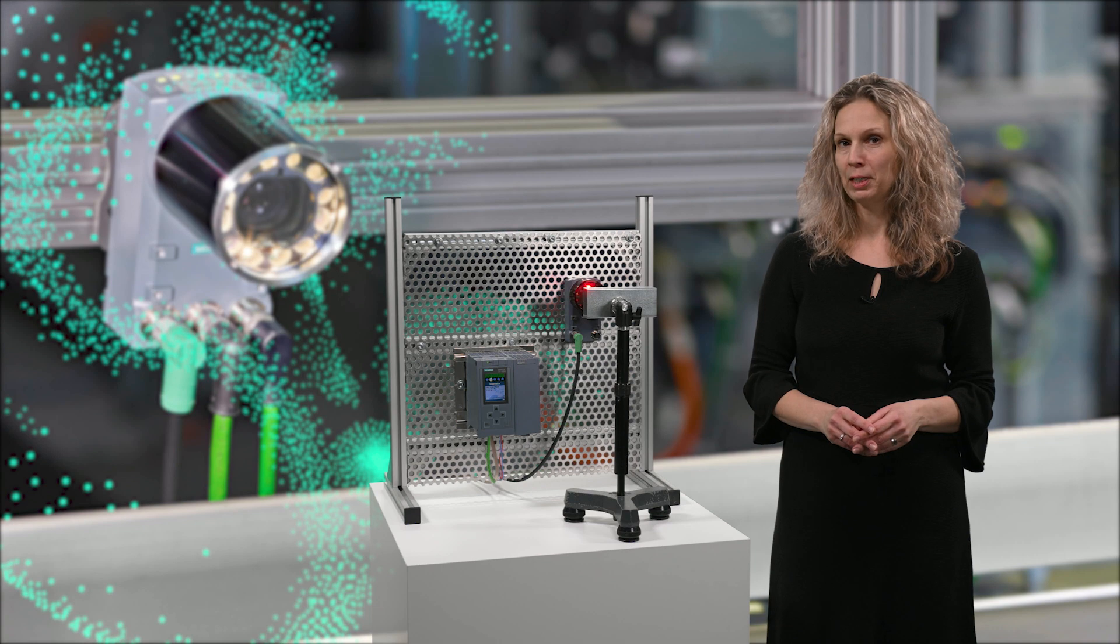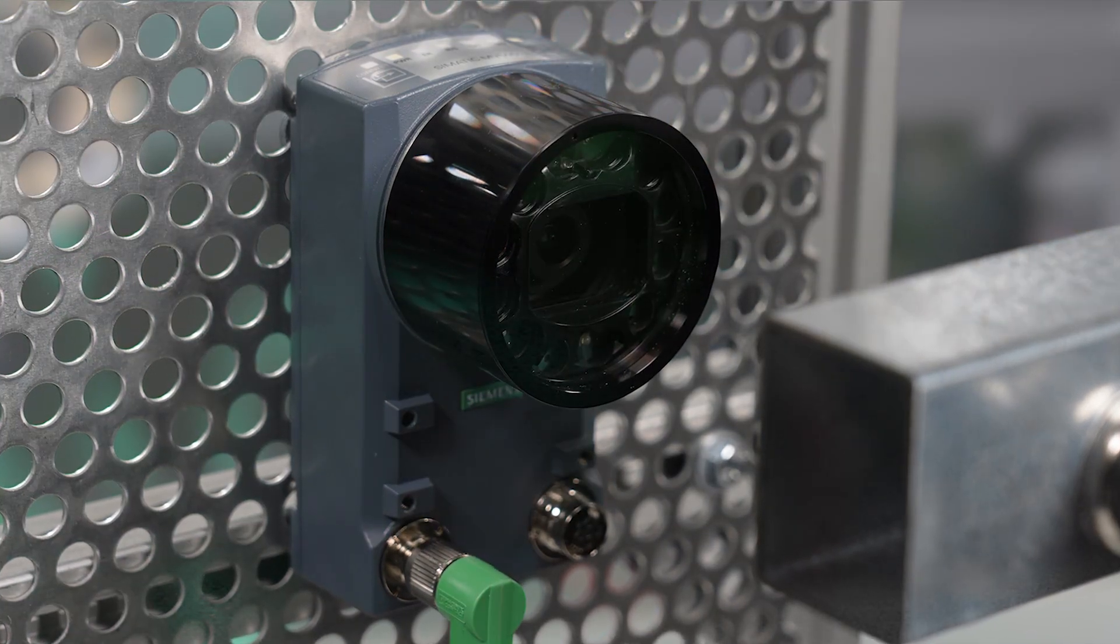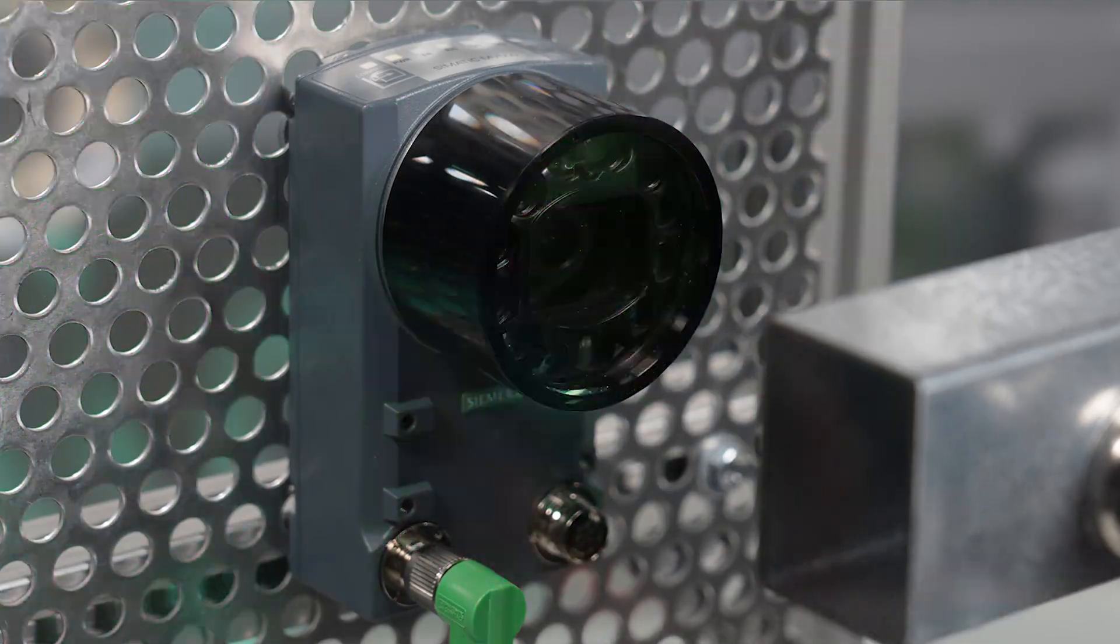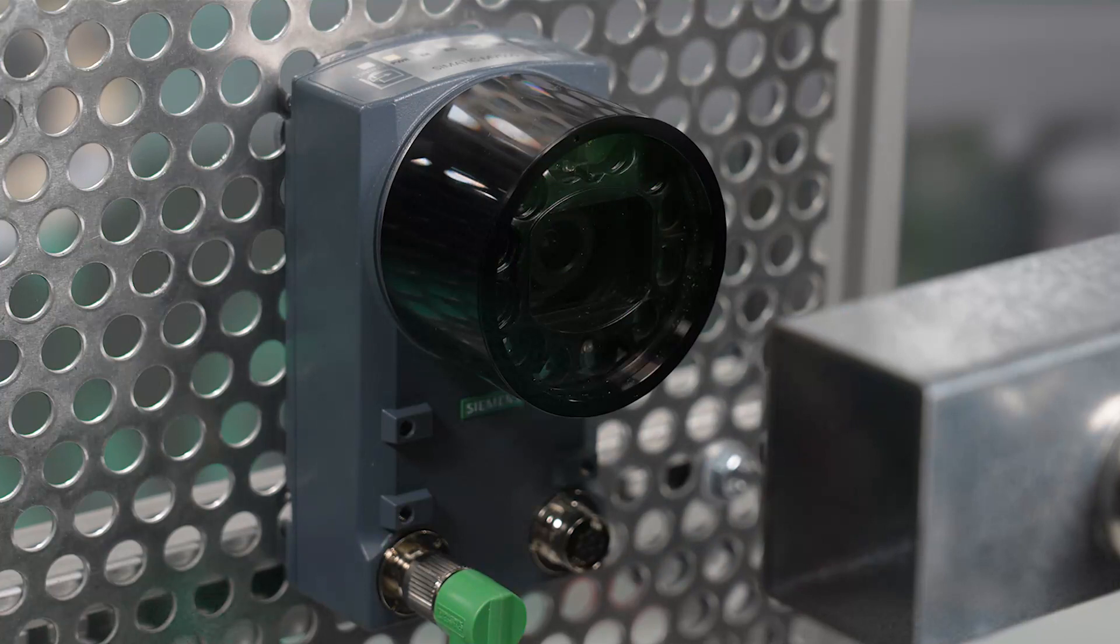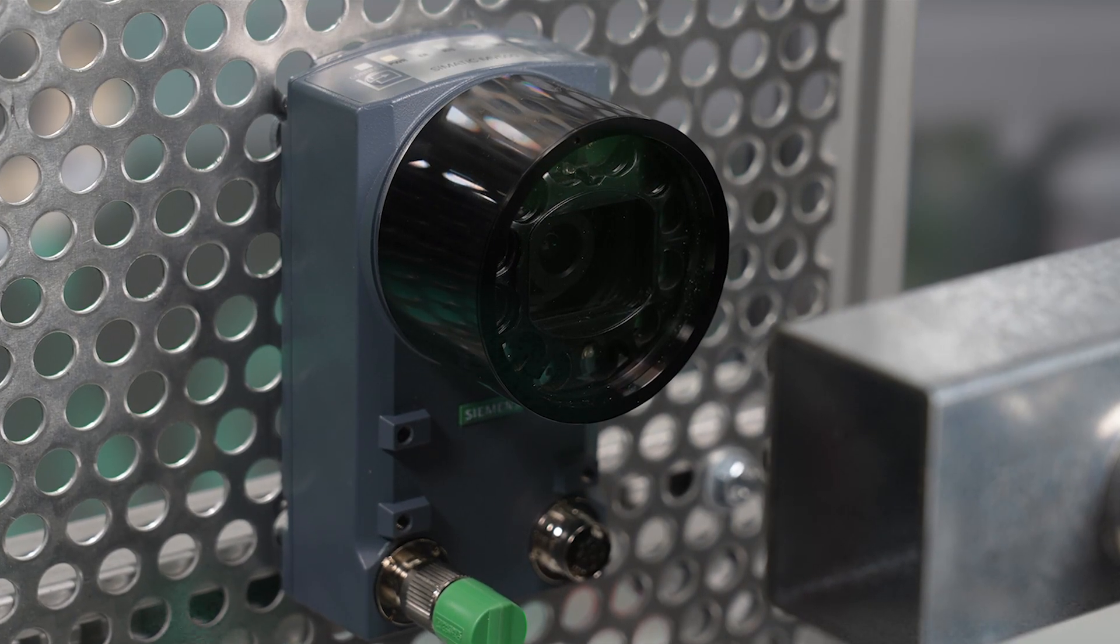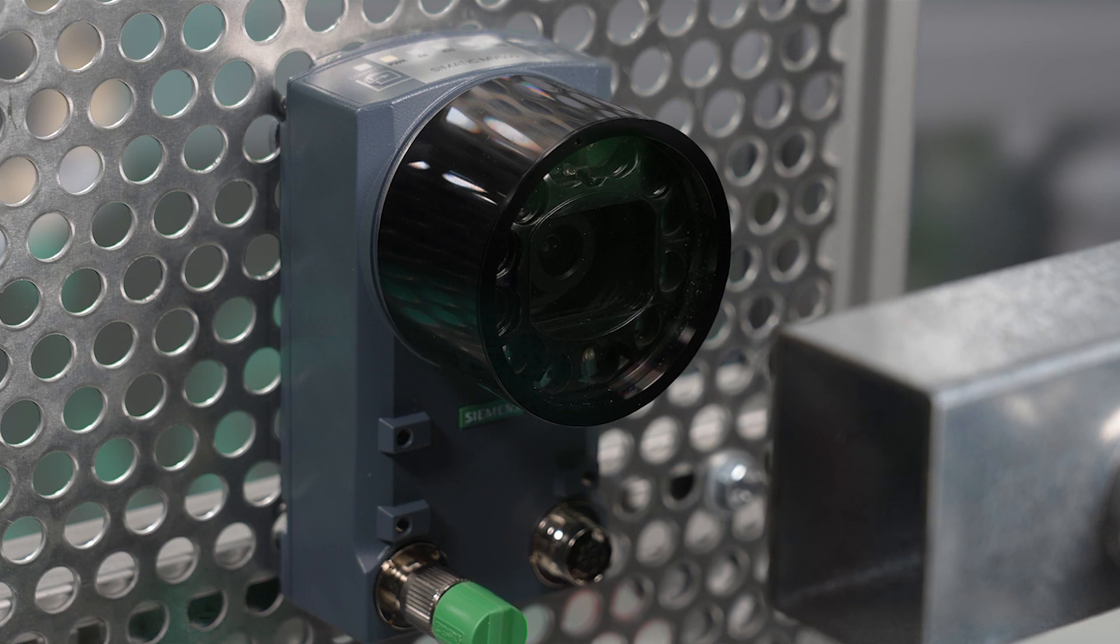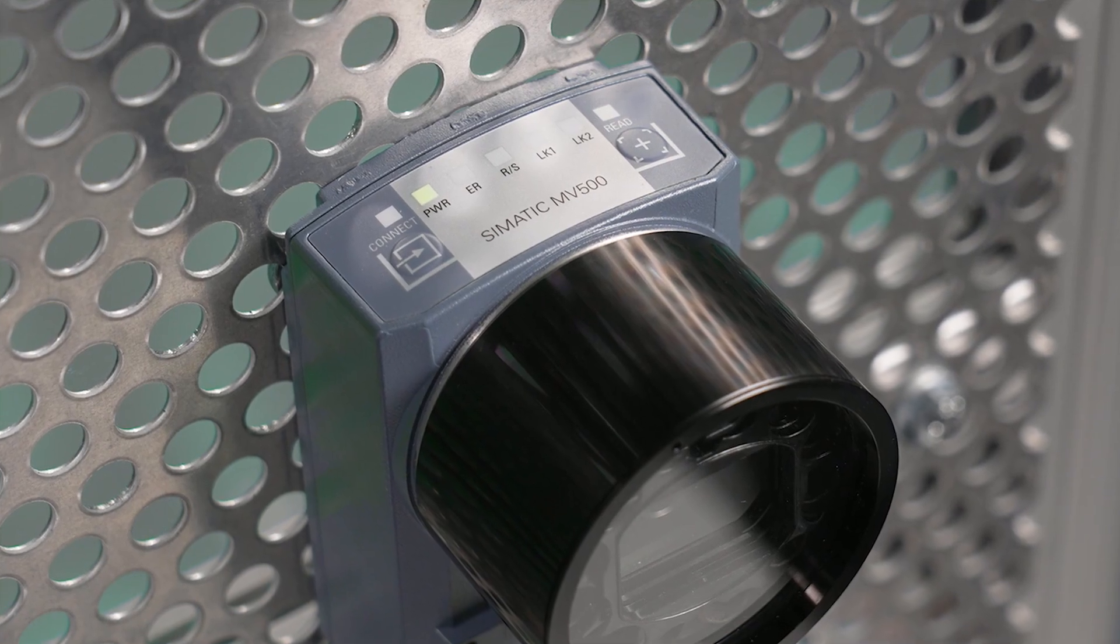Now I press the read button again and the camera starts to take pictures using different lighting and exposure combinations and various software algorithms. This procedure is an automatic parameterization. It's complete when the RS LED switches to green.